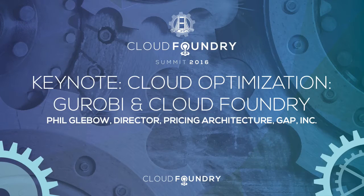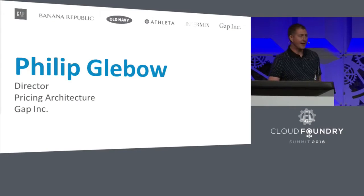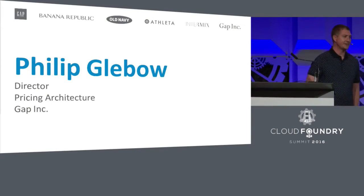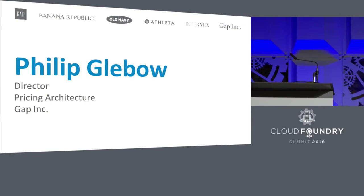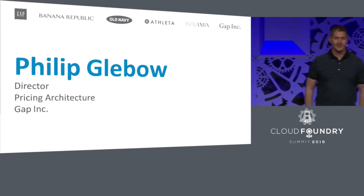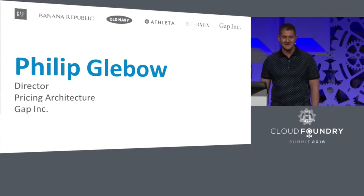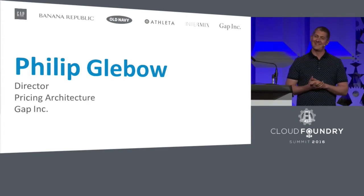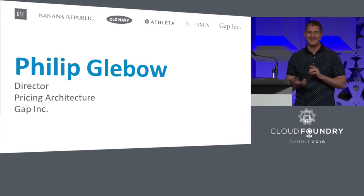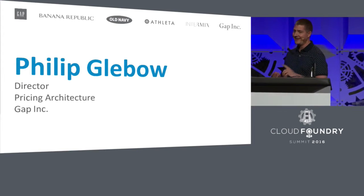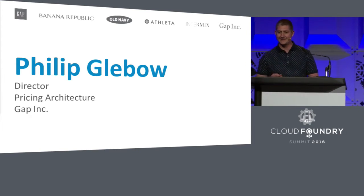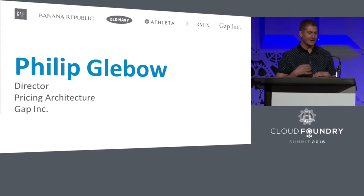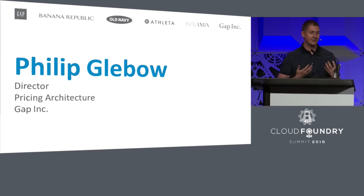Good evening. My name is Philip Glebo. I'm the director of pricing architecture at Gap. At Gap, as many of you know, we make clothes. This is actually from Banana Republic — these are our new traveler jeans. We're comprised of the Gap brand, Old Navy, Intermix, and Athleta, so we have a bunch of different brands.